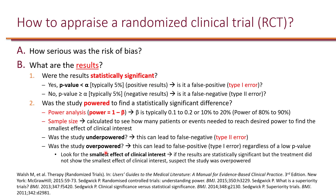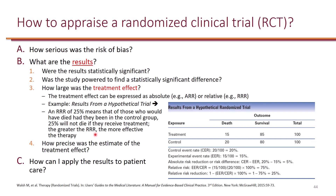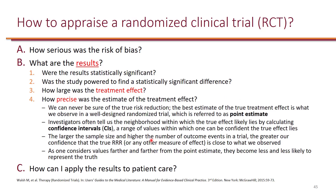The next questions to consider are: how large was the treatment effect? When looking at the size of the treatment effect, you can examine things like absolute risk reduction or relative risk reduction. You can also calculate number needed to treat or number needed to harm.